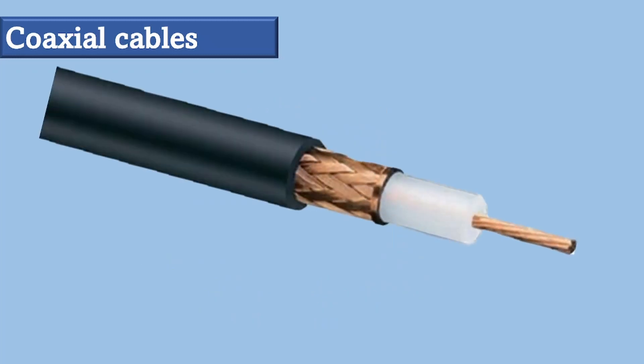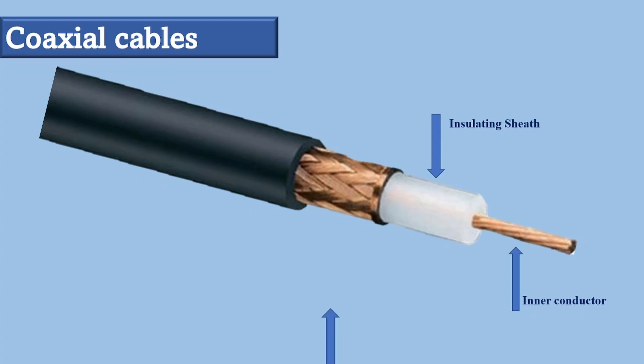Coaxial cable has a central core conductor of solid or stranded copper wire enclosed in an insulating sheath, which is encased in an outer conductor of metal foil, braid, or a combination of the two. The outer metallic wrapping serves two purposes.